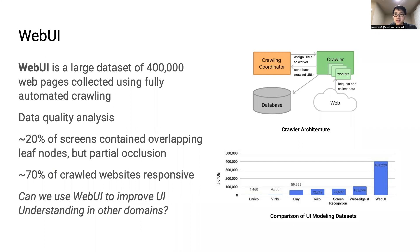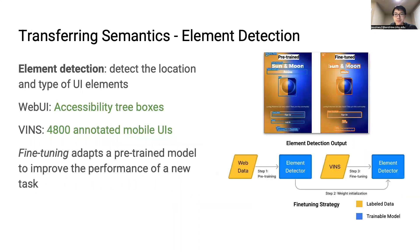We wanted to know if we could use this large dataset to improve UI understanding in the mobile domain, which often lacks semantic metadata. We first looked at element detection, where a model needs to detect the location of UI elements in a screenshot. WebUI contains the accessibility tree of web pages, which we can use to compute the bounding box and accessibility roles of web elements. There are also publicly available datasets like VINS with fewer but high-quality annotations for mobile apps. We applied a fine-tuning strategy where we first pre-trained a model using the large web dataset until it converged, then used those weights as a starting point to refine the model by training on VINS.